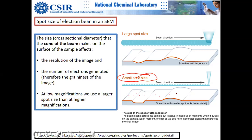Resolution is not just a function of spot size alone — the interaction volume matters too. When the beam enters the sample and generates secondary electrons, it broadens, so outgoing secondary electrons come from a slightly larger area than the beam spot.